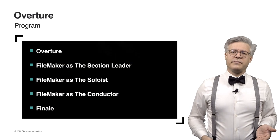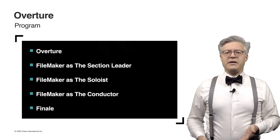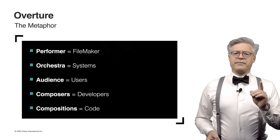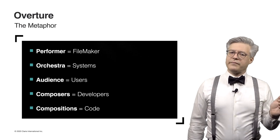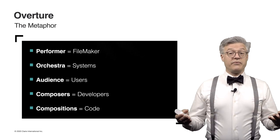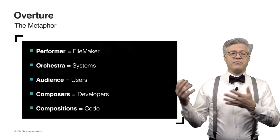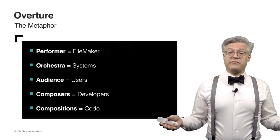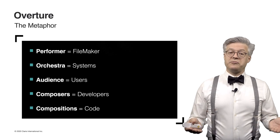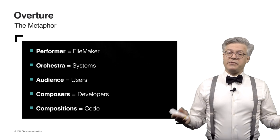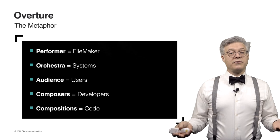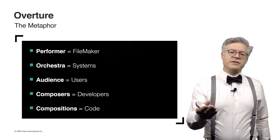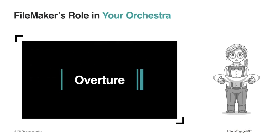We'll start with FileMaker as the section leader, then discuss FileMaker as the soloist, and finally FileMaker as the conductor. One last thing before we get started: FileMaker is the performer, the orchestra is the combination of systems and processes within which FileMaker performs, the audience are the users and beneficiaries of our systems, software developers and designers are our composers, and the compositions are the code and integrations that we as software developers create. I hope you find resonance with one or more of these works as we explore FileMaker's role in your orchestra.